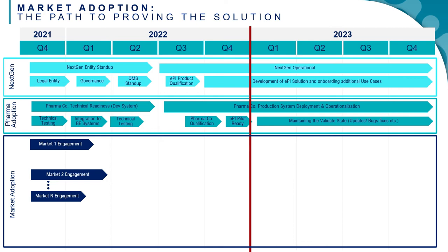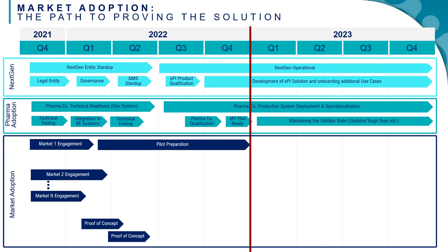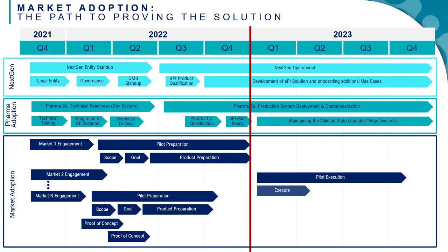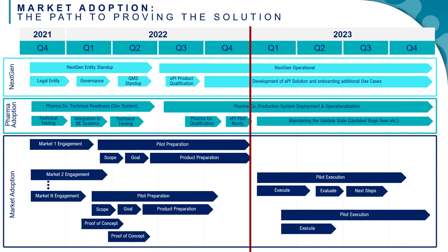It is likely that some markets will proceed faster than others, and some markets may not initially lead to a proof of concept or pilot, depending on factors such as resources or other priorities. It is important to have a pilot in mind when engaging, as there are many facets to consider: the scope, which products to use, the goal — what we all want to achieve. We then need to prepare the products for the pilot itself, considering potential artwork changes and regulatory submissions. We also need to consider how patients participating in the pilot would know where to get the app and whether the products they have are part of the pilot. Once the pilot is agreed, we execute it, evaluate the results, and determine next steps. We would like to have more than one pilot running through 2023 to get feedback from different stakeholders and different parts of the world.